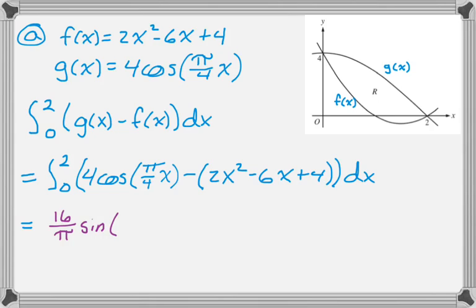When I plug in 2, 2 times π/4 is π/2. So just πx/4. Then I'm going to keep the parentheses to get reverse power rule for each term, and then evaluate from 0 to 2.